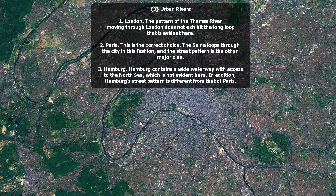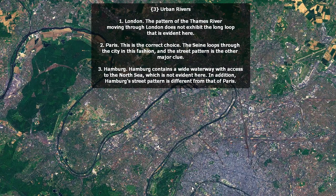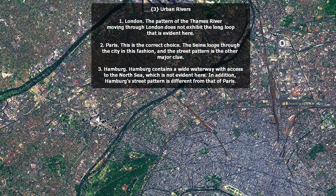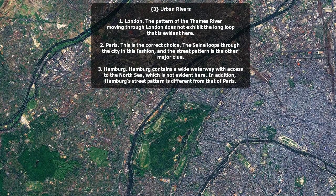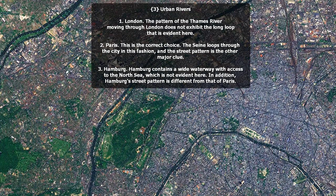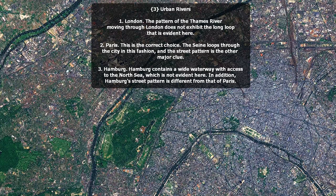Kilimanjaro is a good guess given the tropical vegetation, but Kilimanjaro is also much higher, larger, and is in part snow-capped. Urban Rivers. Paris is the correct choice here. The Seine loops through the city in this fashion, and the street pattern as you can see here is the other major clue.